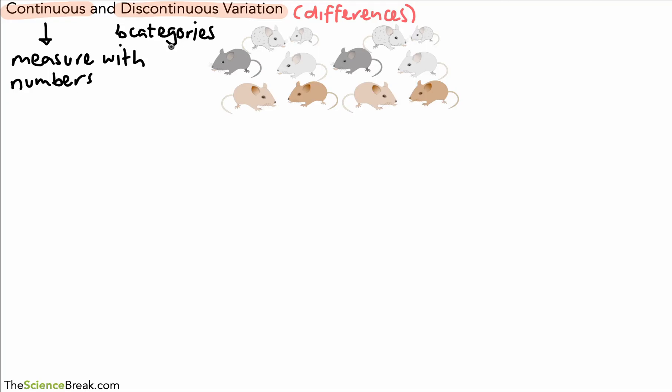So what do I mean by categories? Well, categories is something like colour. So if you look at the colour of the mice, we can't put numerical values to colour, we just give category. So we've got light brown, a couple of mice light brown, brown, light grey, grey. So these are categories and we describe that variation as discontinuous.